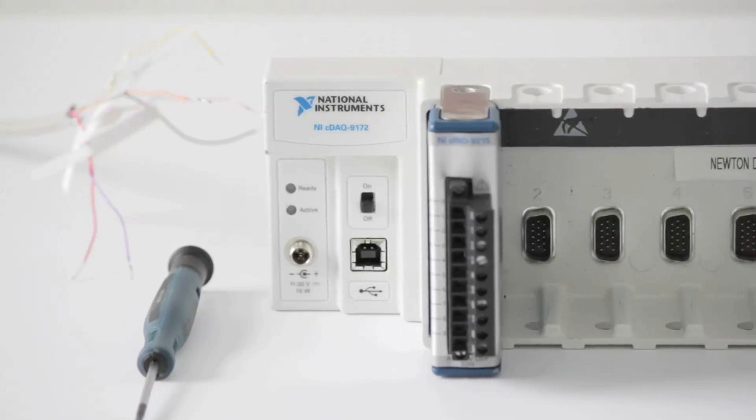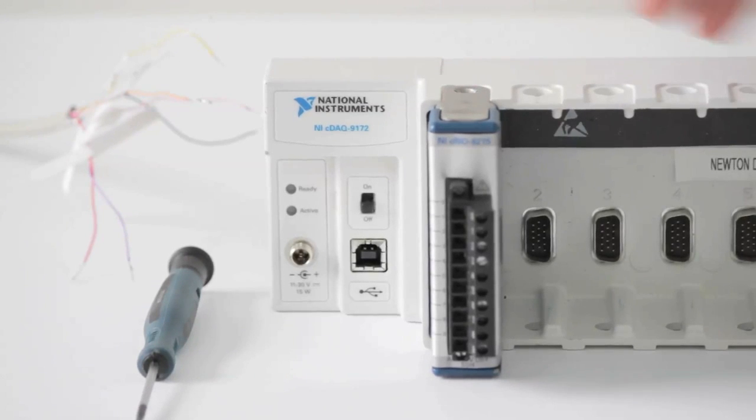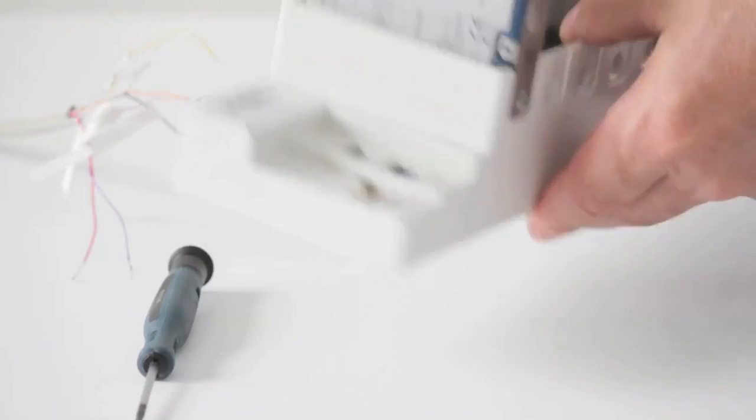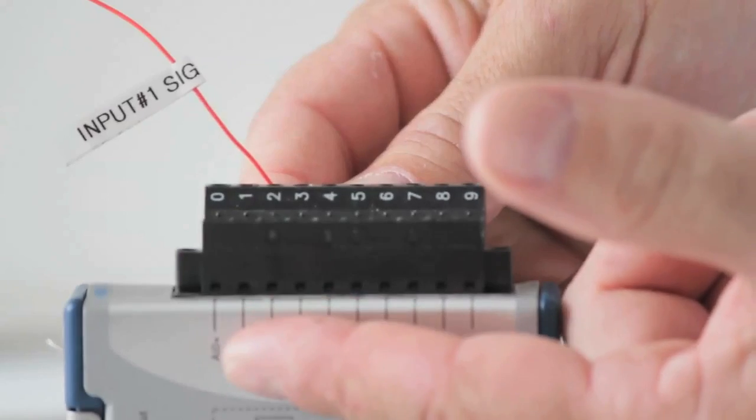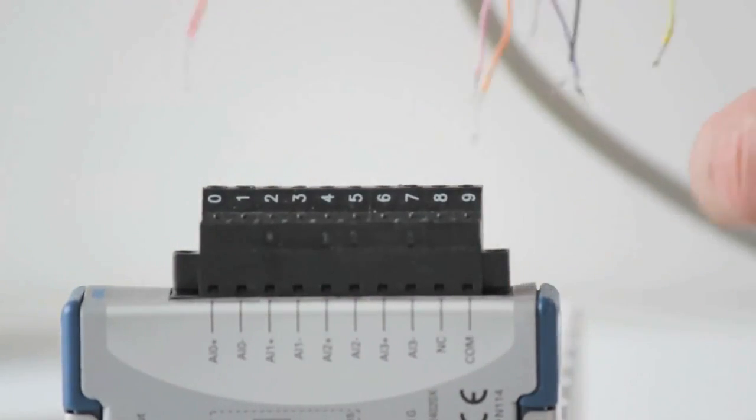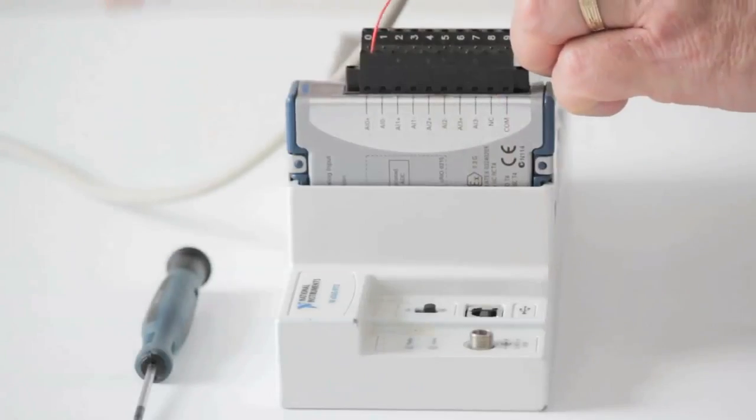The next step is to make the wired connections from the sensor isolator to the DAC using a DB15 breakout cable. Keep in mind, channels 1-4 should be connected in a logical sequence to the analog inputs of the DAC.